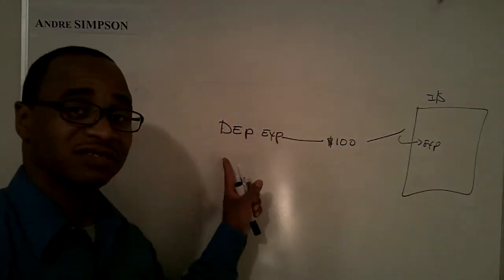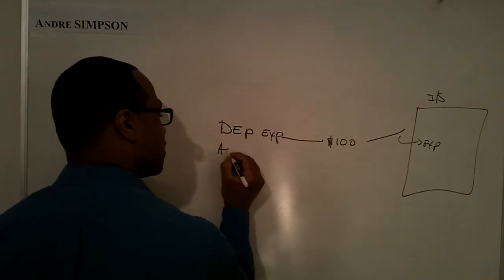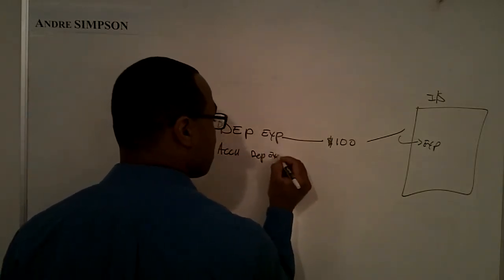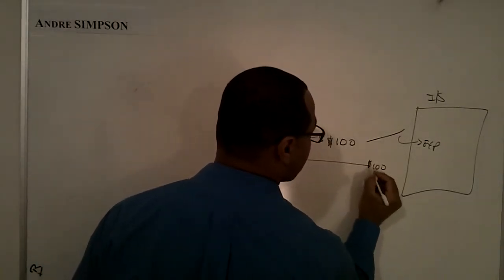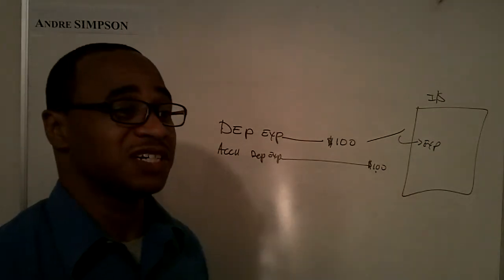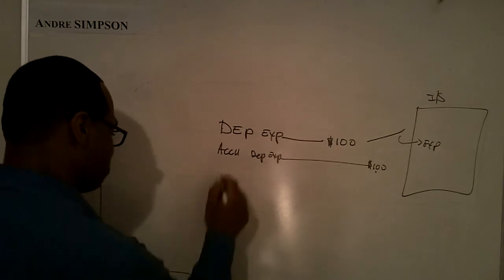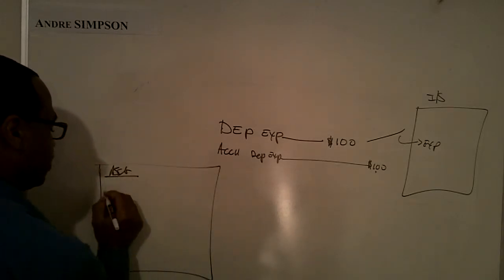The second one here is going to be accumulated depreciation of $100. Now, the accumulated depreciation, that is going to go directly to your balance sheet.